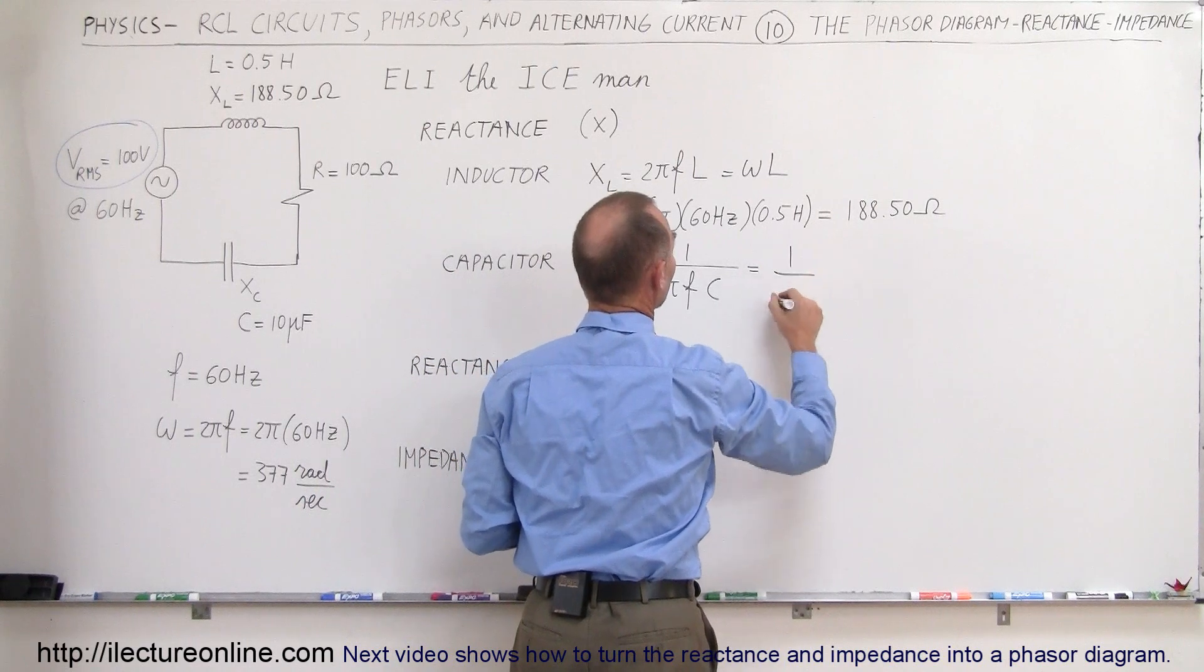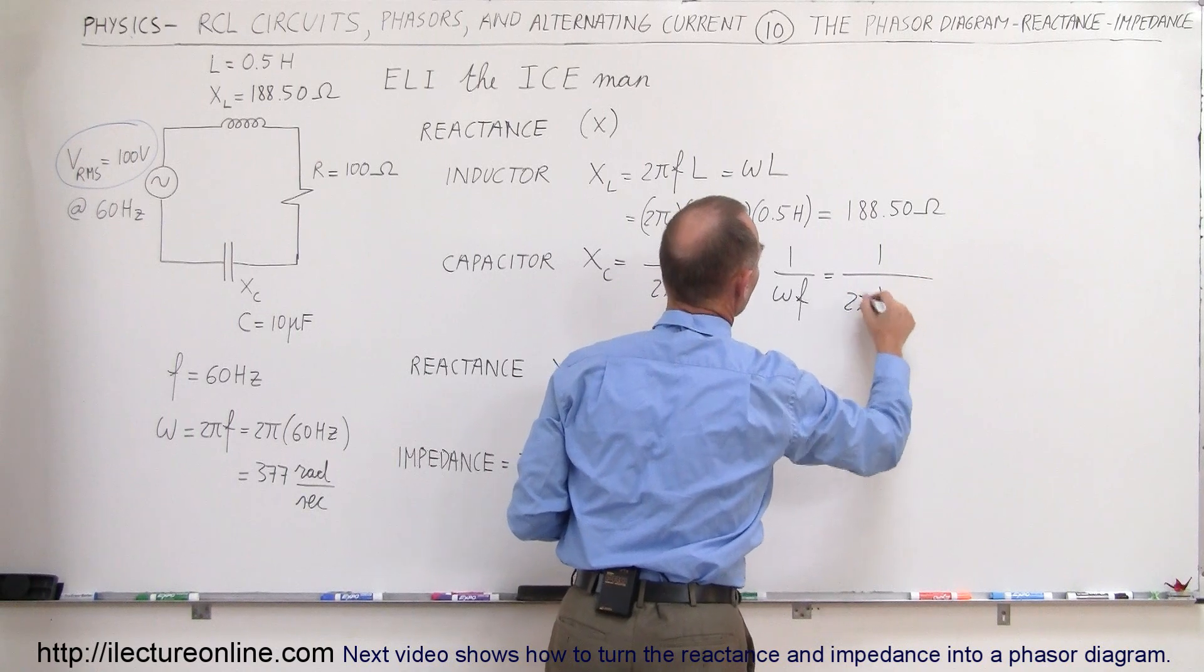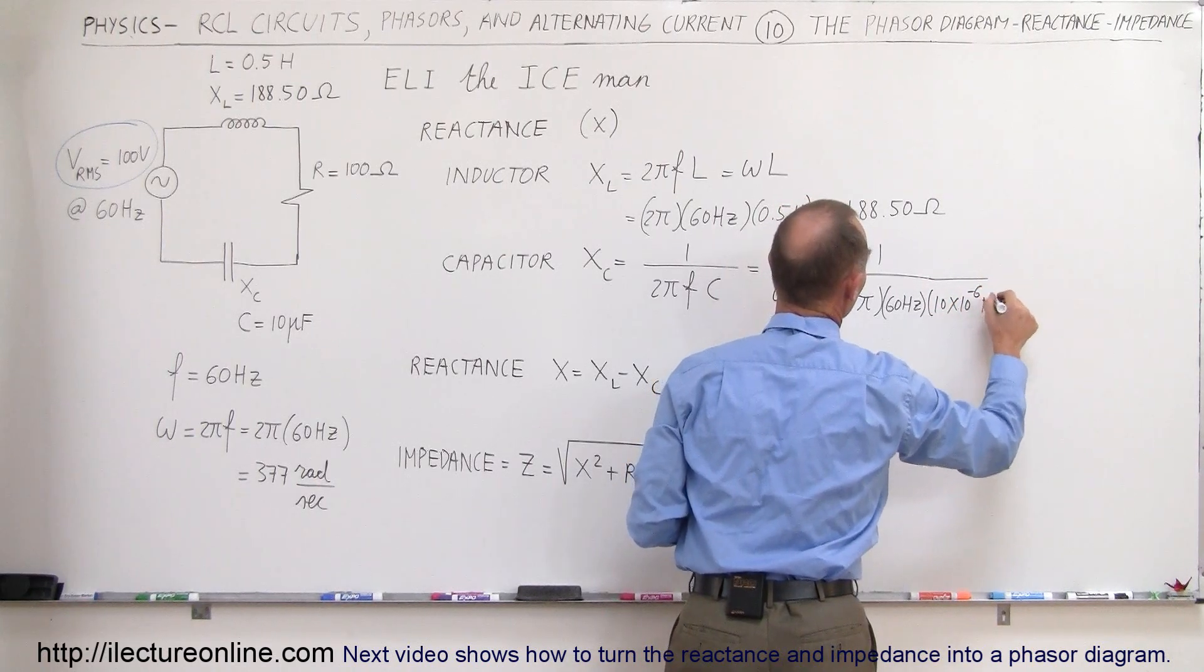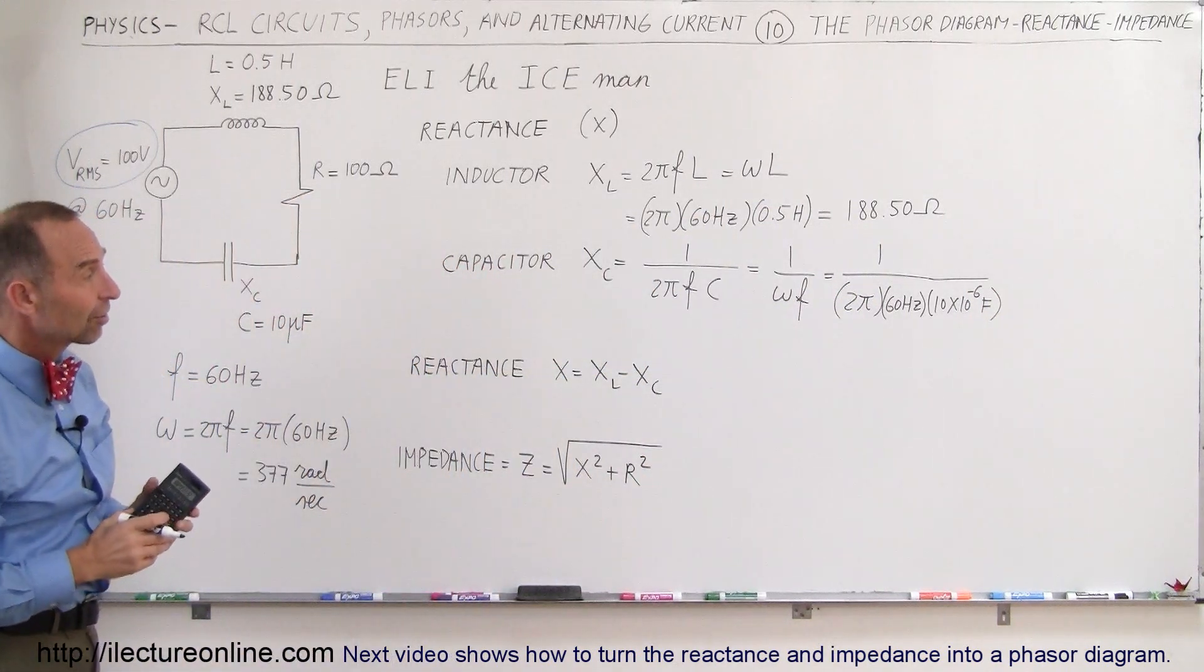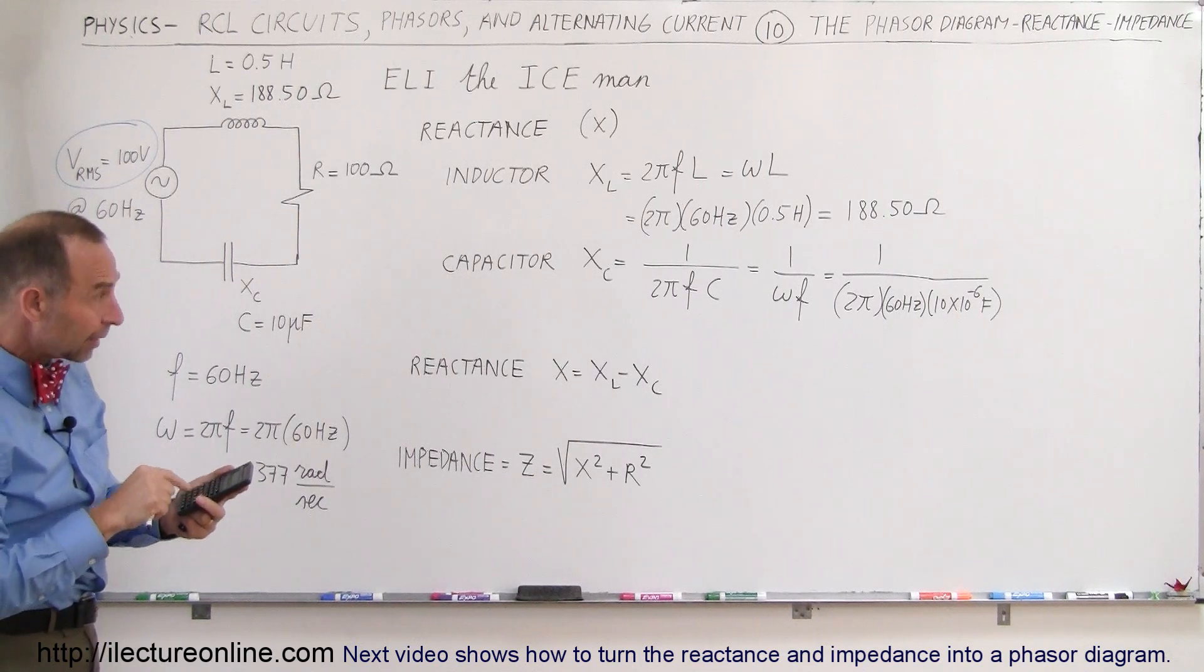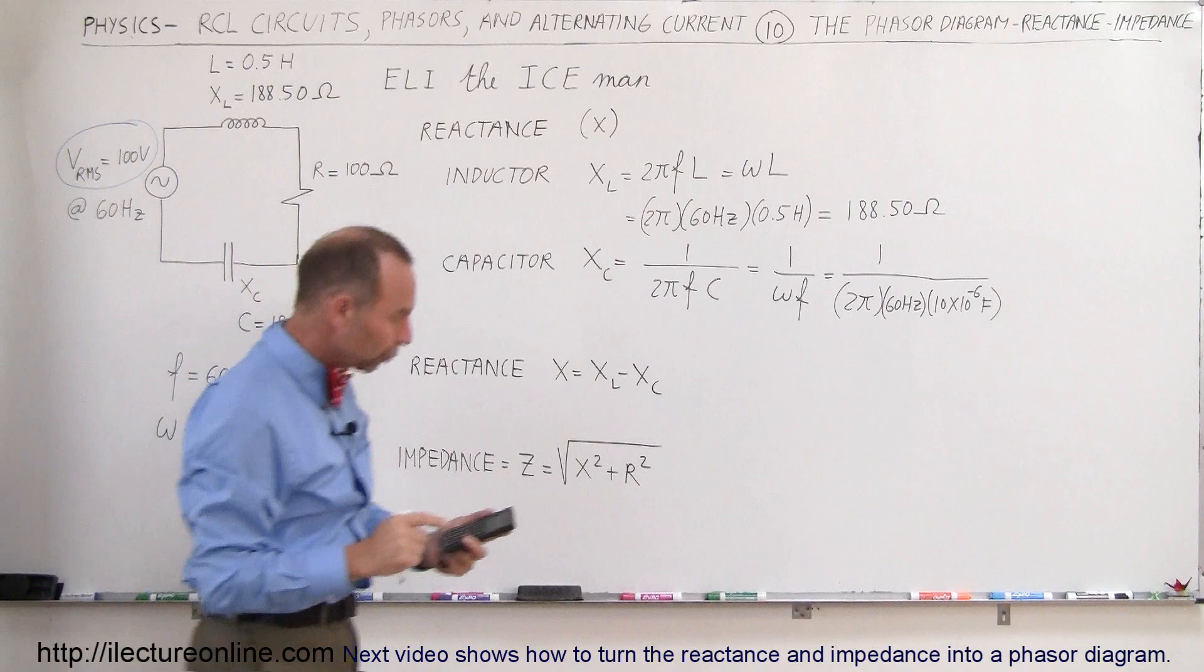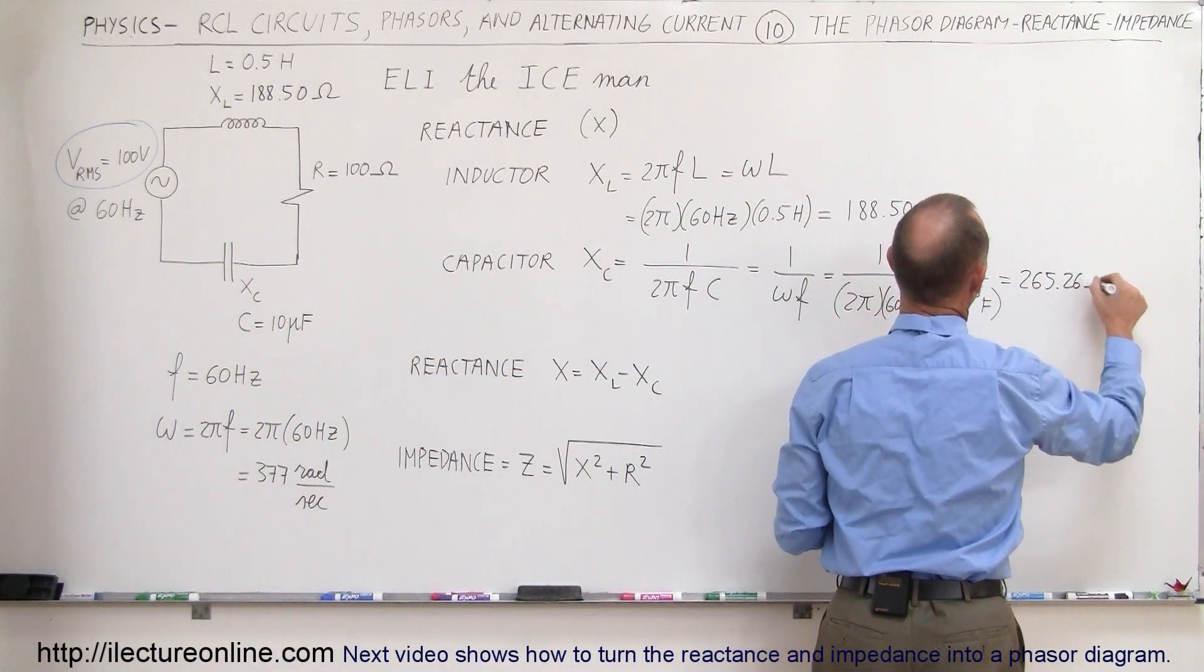So this can also be written as 1 over ω times C. So this would be 1 divided by 2π times the frequency, which is again 60 hertz, times the capacitance, which is 10 times 10 to the minus 6 farads, because that's 10 microfarads. So 2 times π times 60 times 10E to the minus 6, take the inverse, and we get 265.26. So that would be 265.26 ohms.